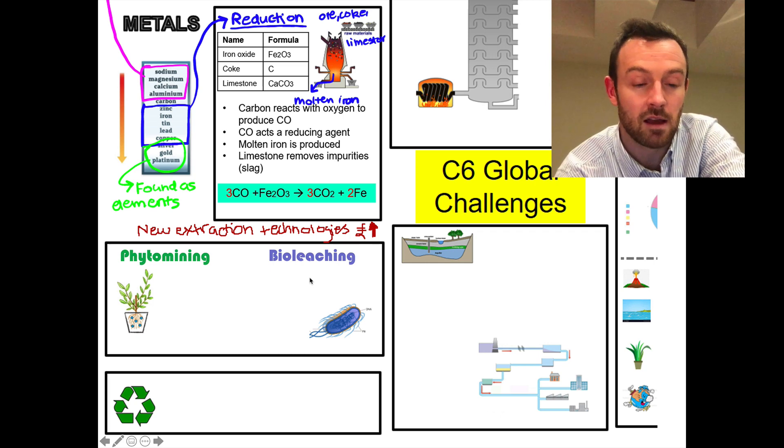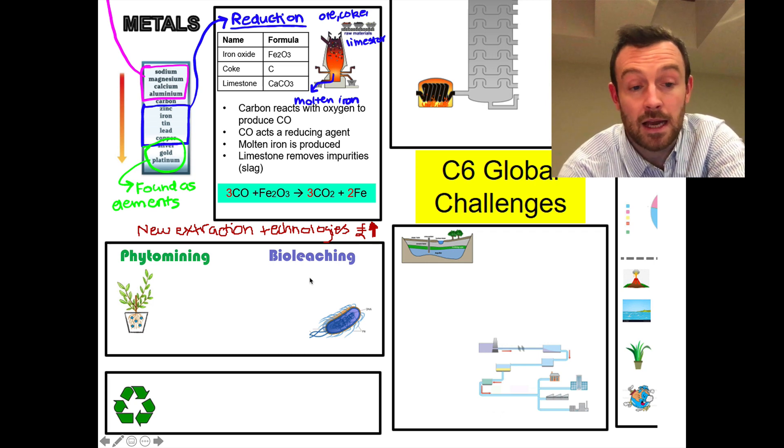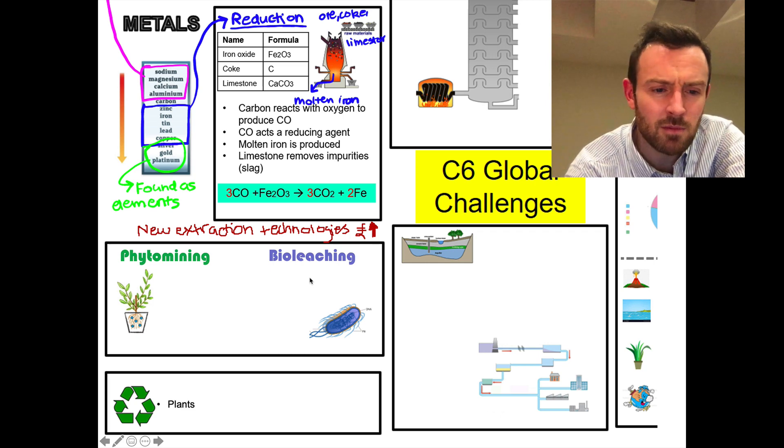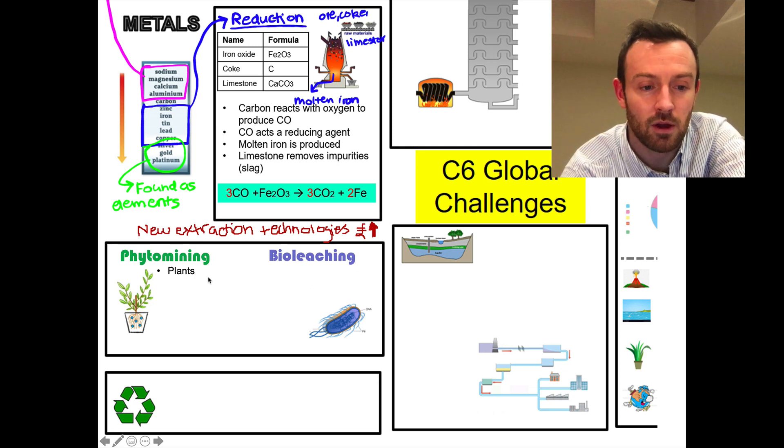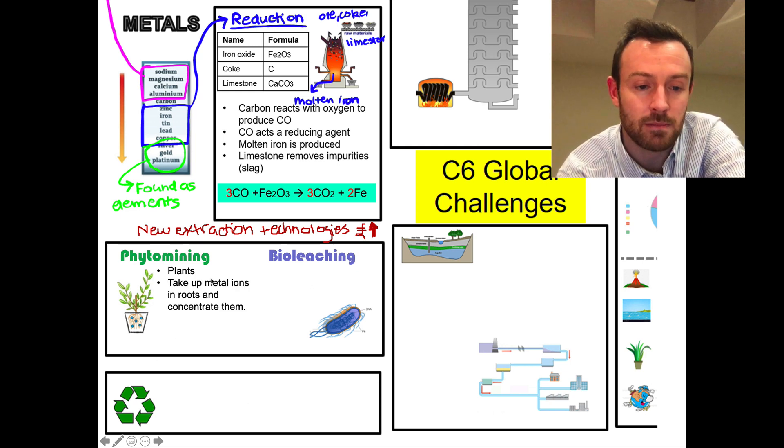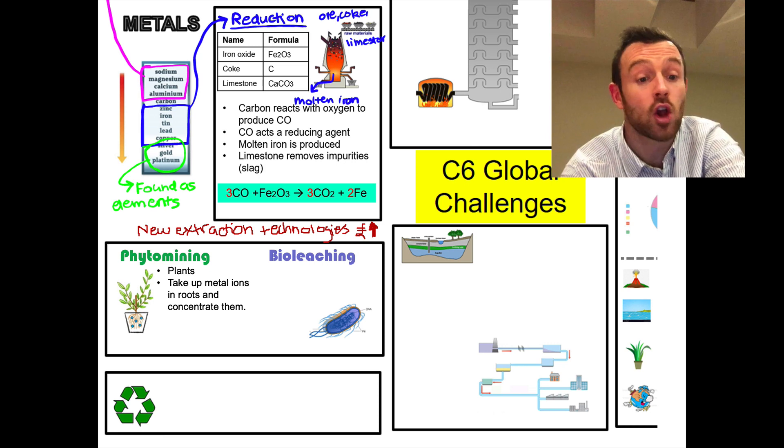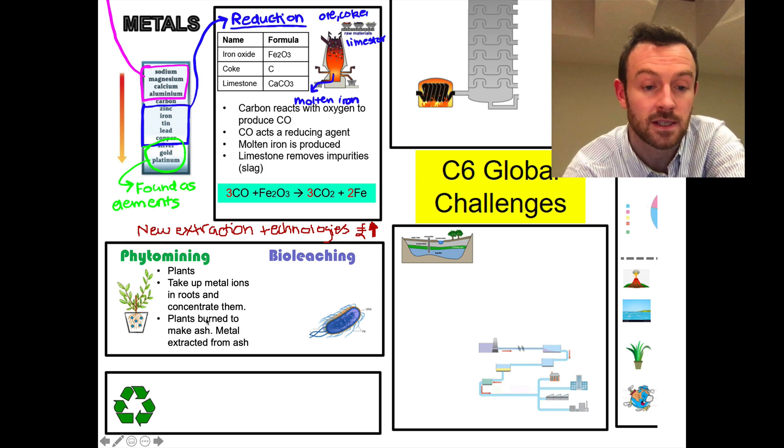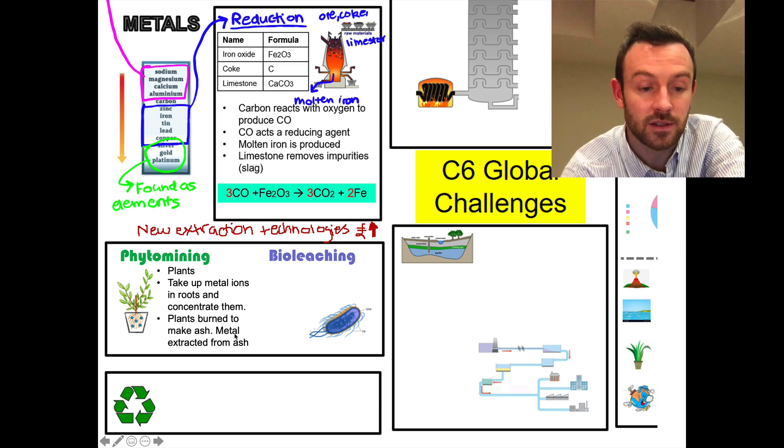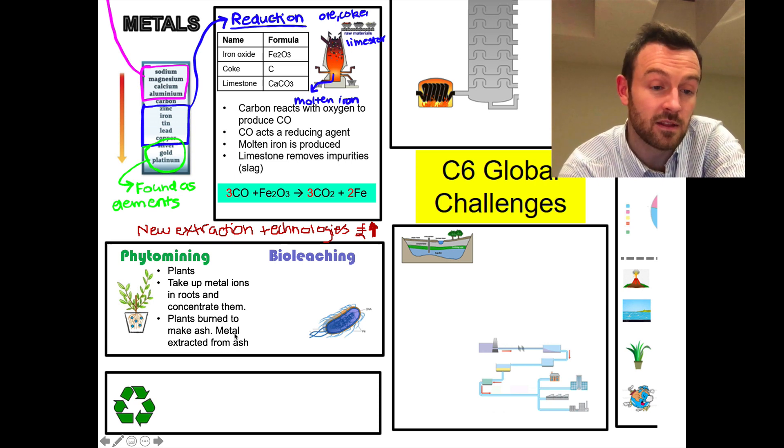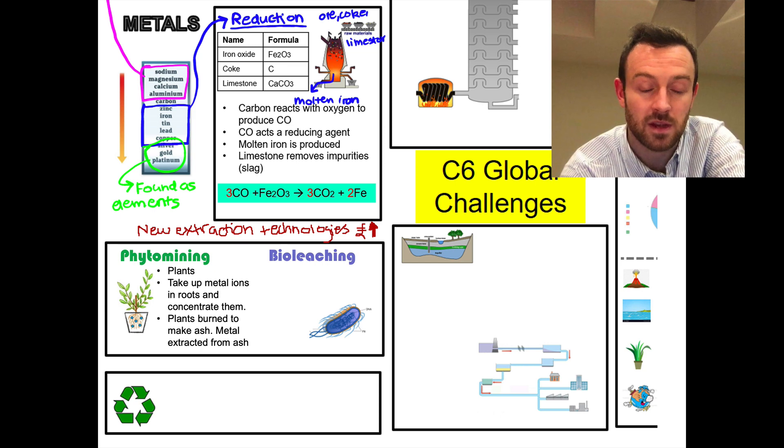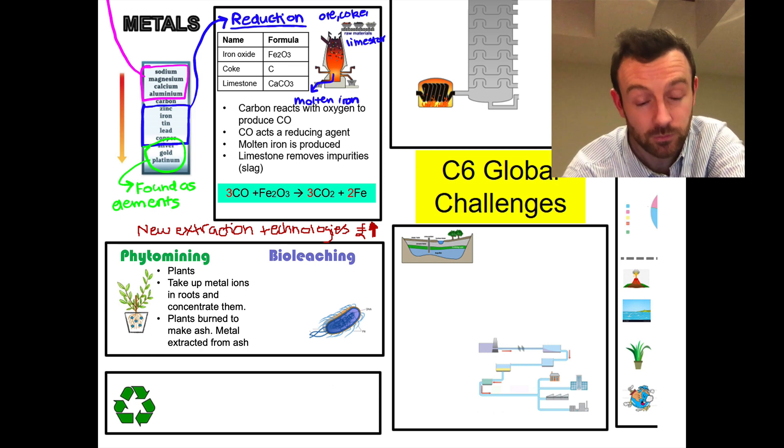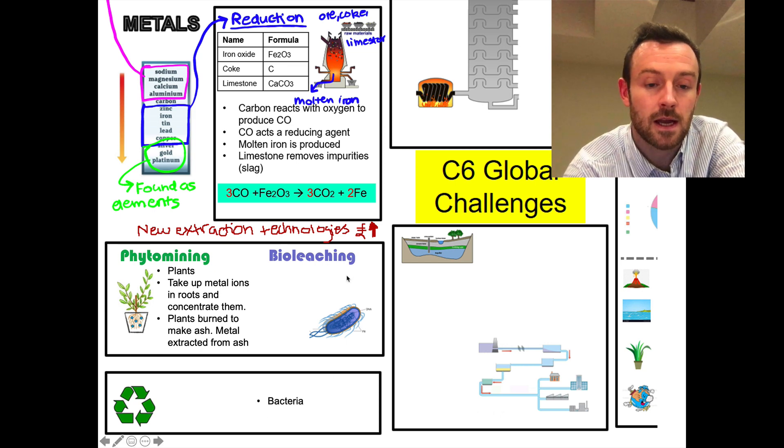So the two major technologies that we need to look at are phytomining and bioleaching. Phytomining is pretty simple really - it's just plants taking up the metal ions in roots and then concentrating them in the tissues of the plant, in the leaves of the plant for example. Now plants can be then burned to make ash, and then the metals are in the ash, so then we can extract the metal from the ash. Bioleaching uses bacteria - so that's a major difference.